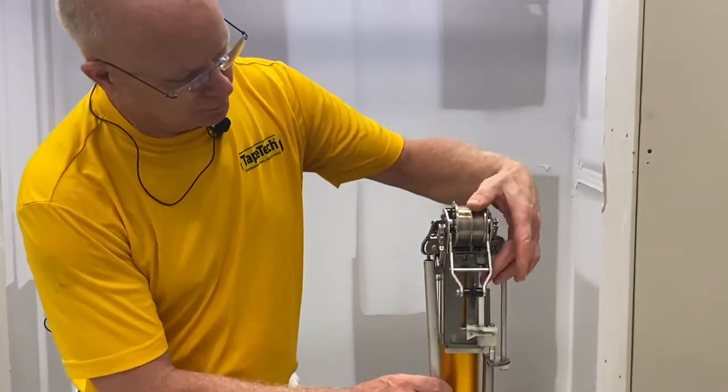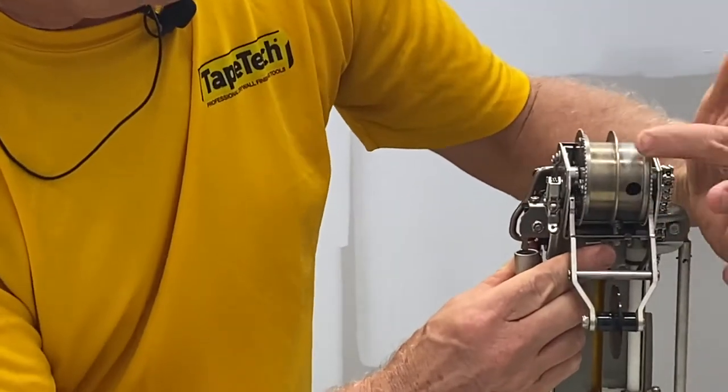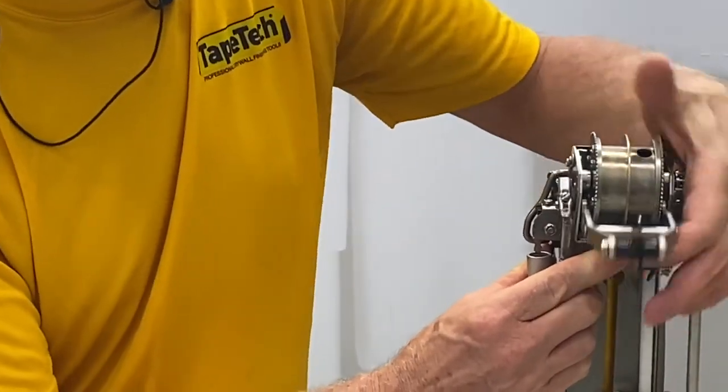If I lift up this creaser wheel, underneath there you see this little tab right here. If we pull this out, this adjusts how this wheel turns, how easy it turns or how hard it turns.